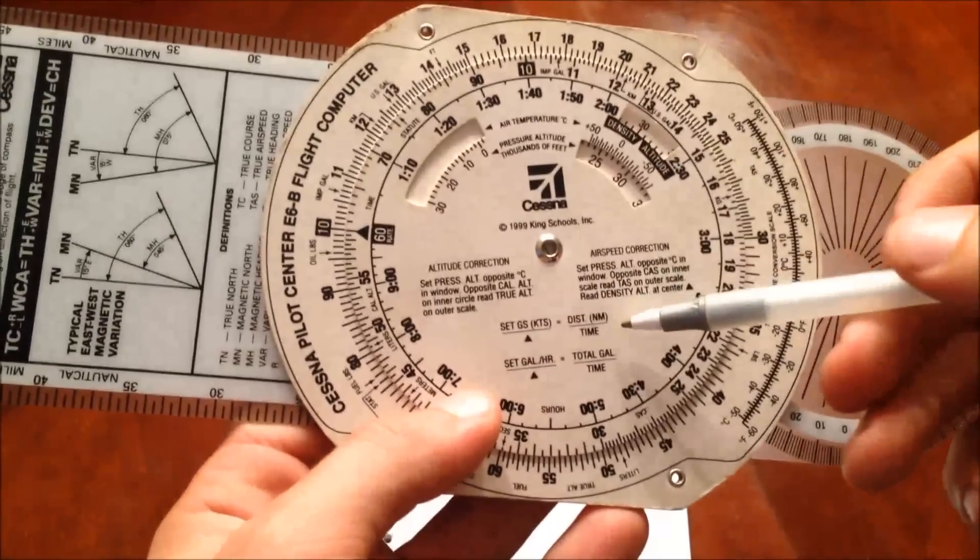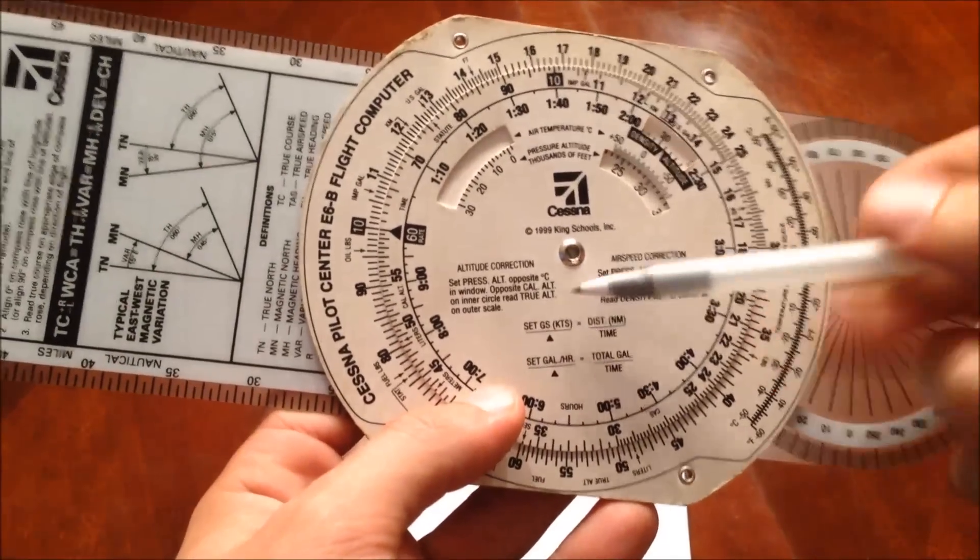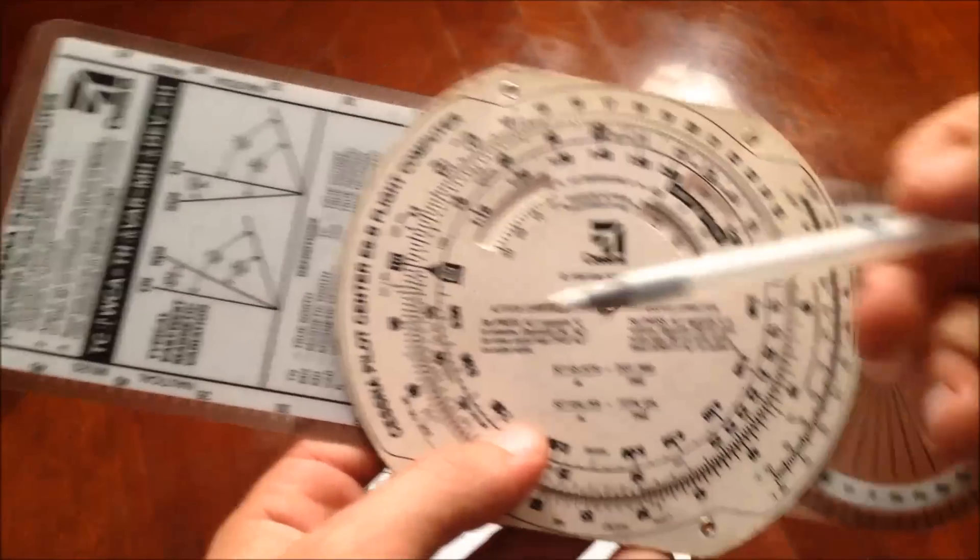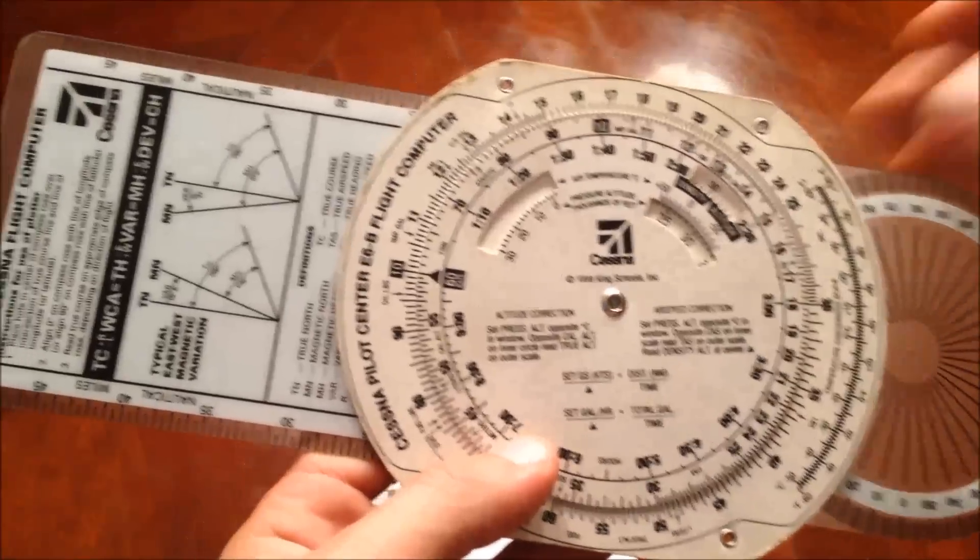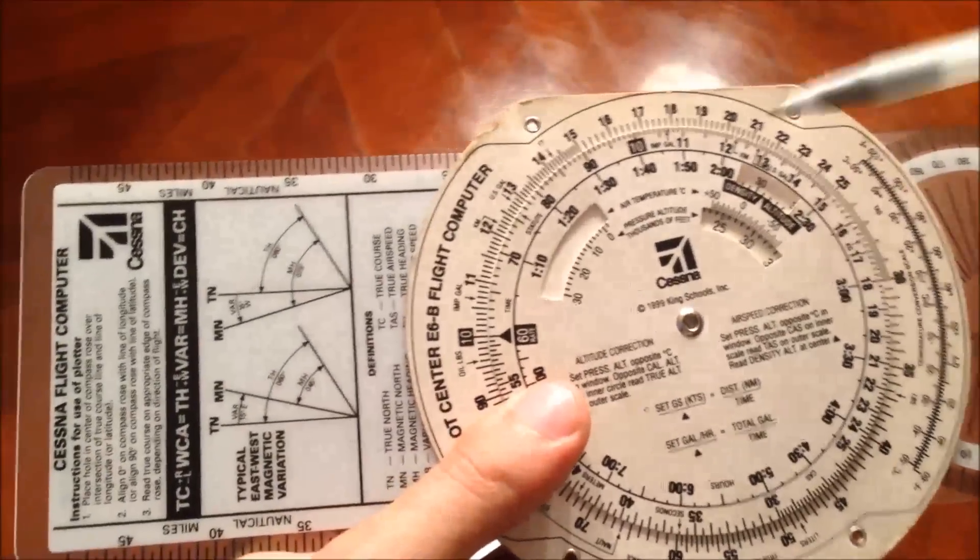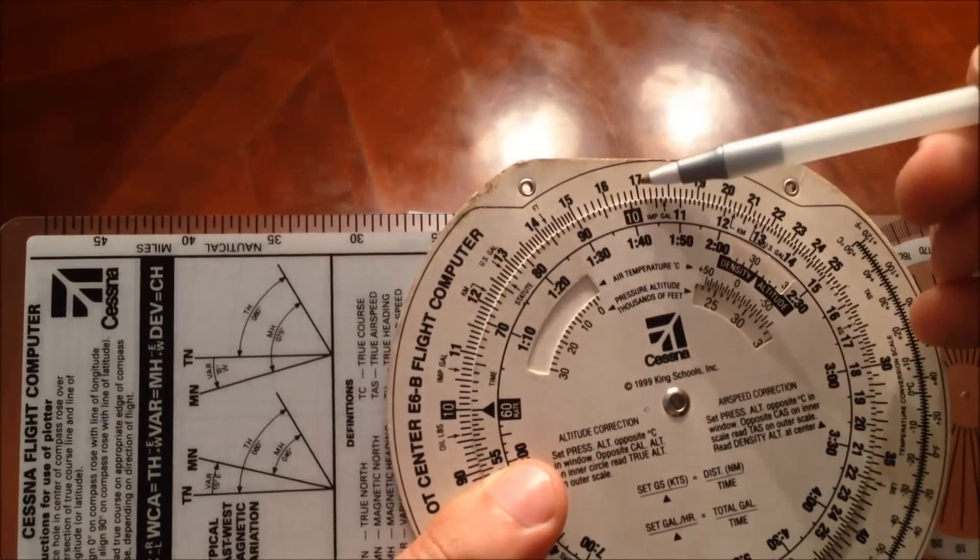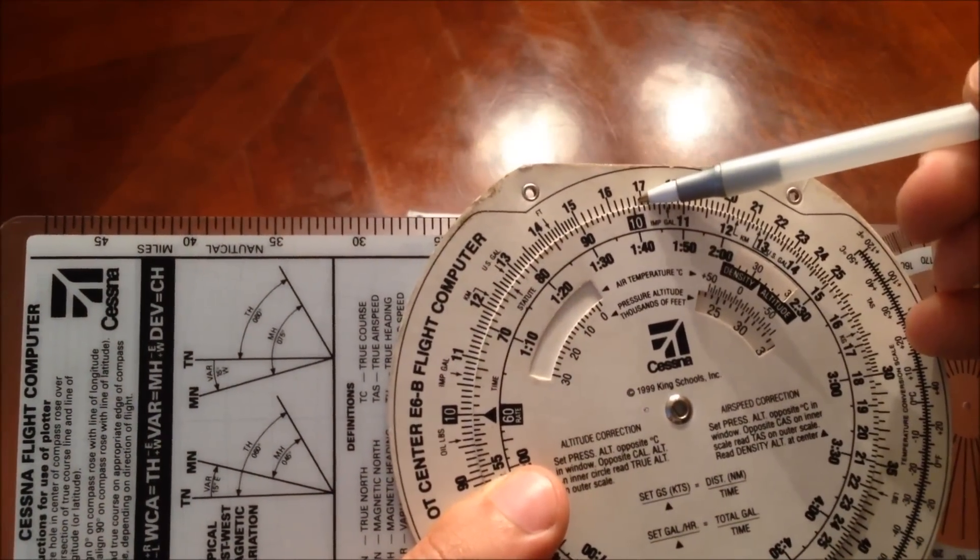So now, let's see how much time we would travel if we go at the same ground speed of 100 knots. And we can use the same thing that we have down here. So we went for, let's say, 10 minutes. That means that the distance that we traveled was 16 to 17 miles.